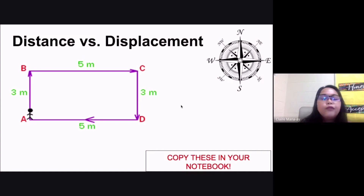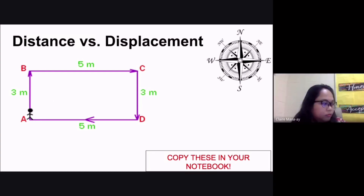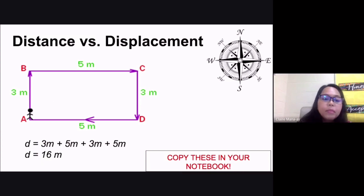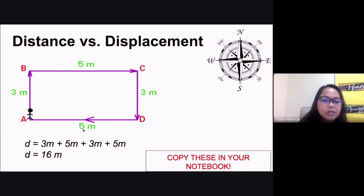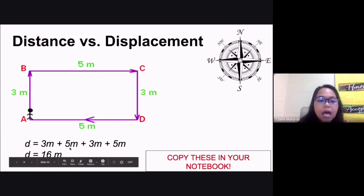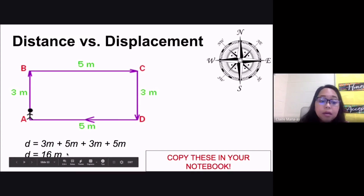If you are asked what is the distance that this person has traveled, the answer is 16 meters. Distance is simply the total length the person has traveled, so we add everything: 3 meters plus 5 meters plus 3 meters plus 5 meters gives us 16 meters. So the distance traveled is 16 meters.